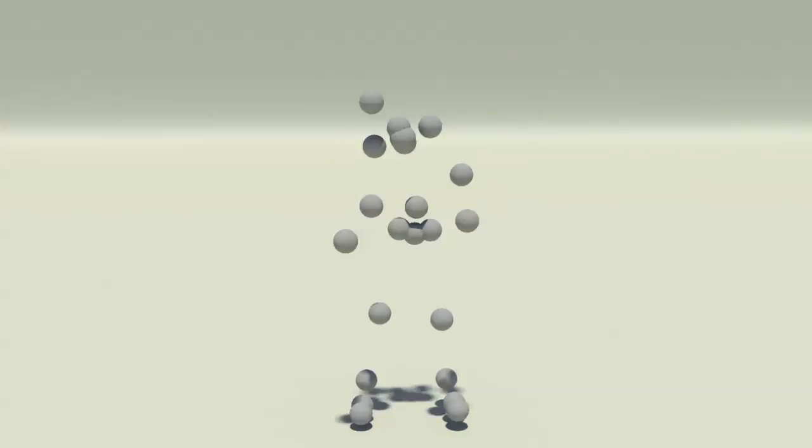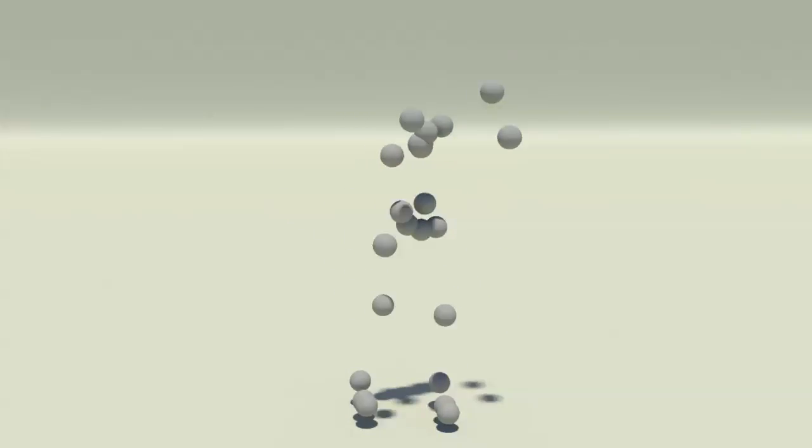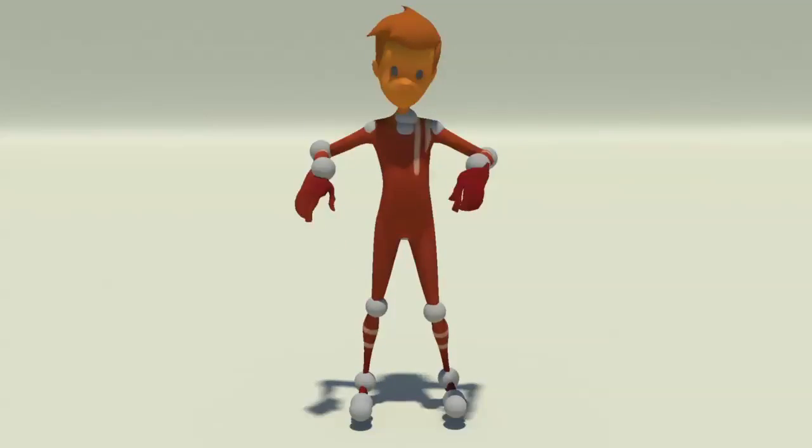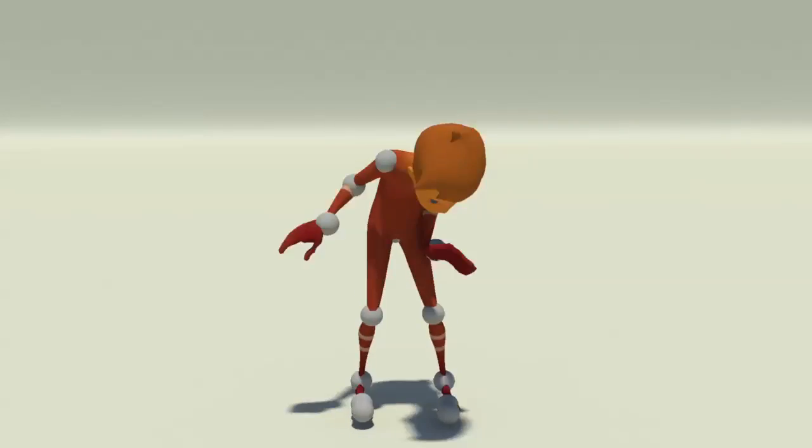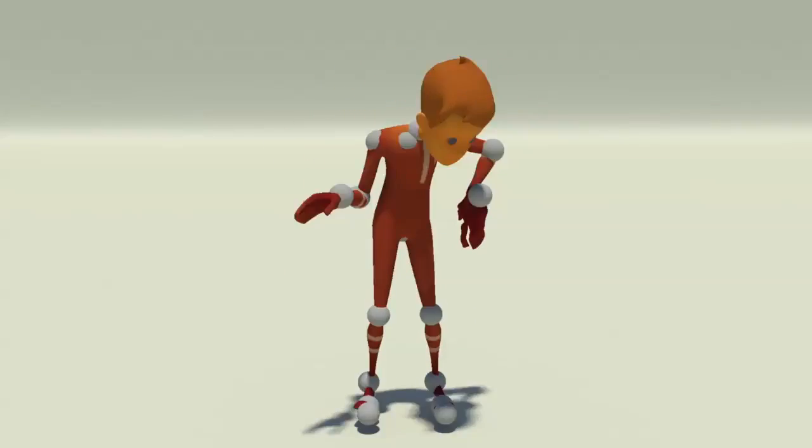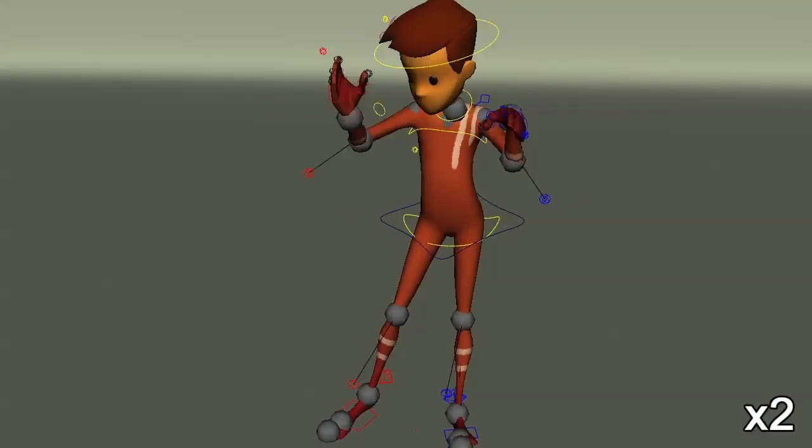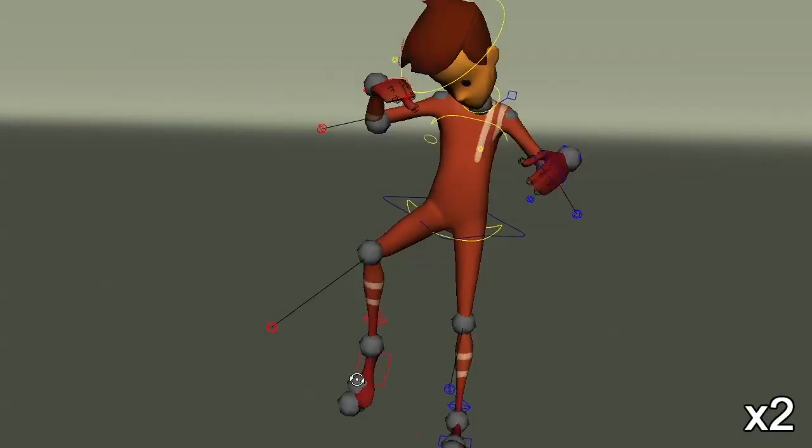We can also use joint positions generated from motion capture data. Here we show this applied to a humanoid character. The results can be edited interactively by animators.